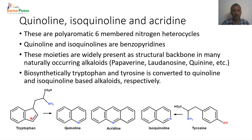Looking at the tryptophan structure, we have a six-membered ring, and at the fourth position from the benzene ring we have a Quinoline unit, where an amino group is present. This is how Quinoline can be prepared biosynthetically from tryptophan. Similarly, in tyrosine, we have a six-membered aromatic benzene ring and at the third position we have a nitrogen. So tyrosine and tryptophan are the biosynthetic starting materials for Isoquinoline and Quinoline, respectively.